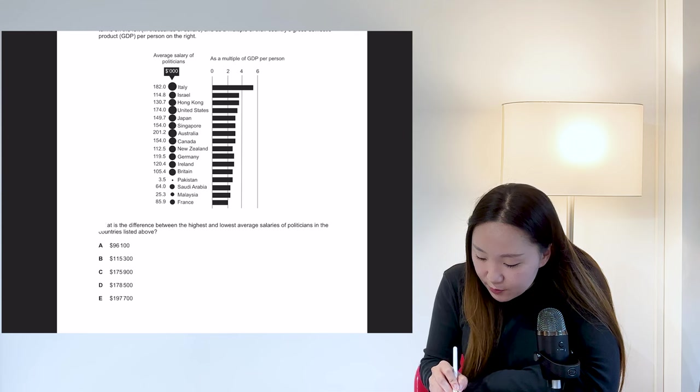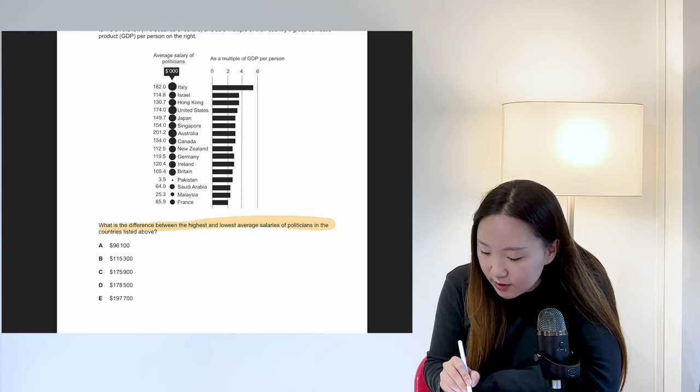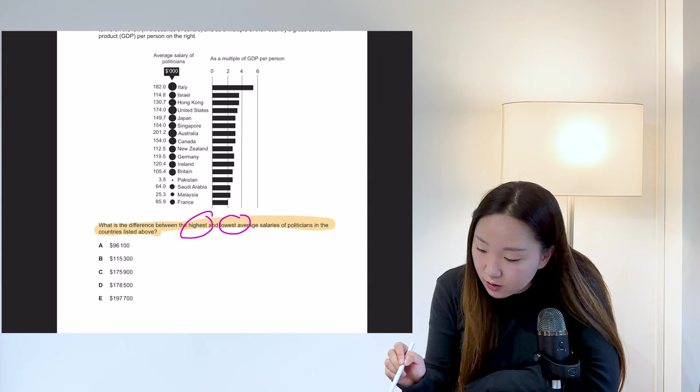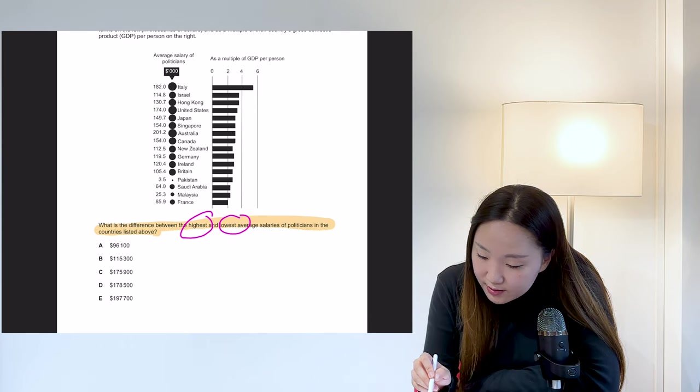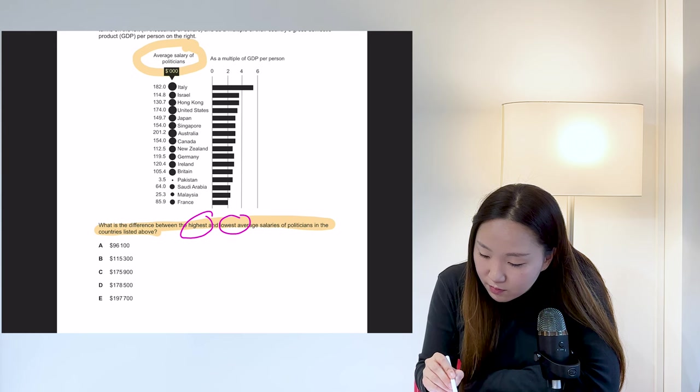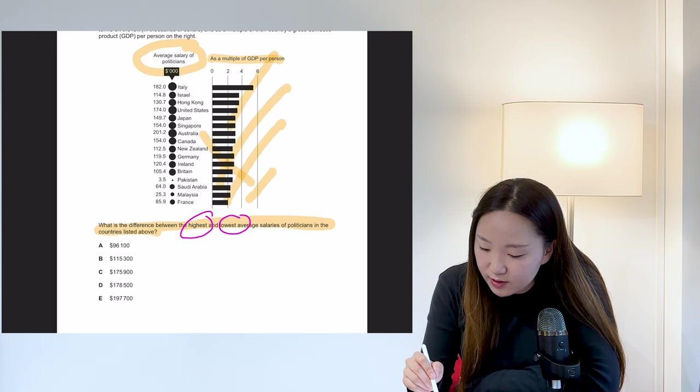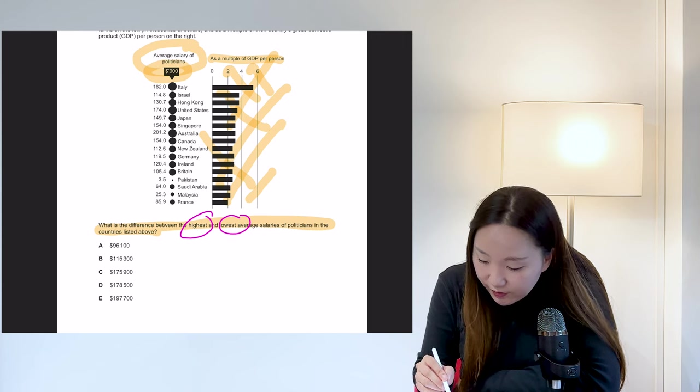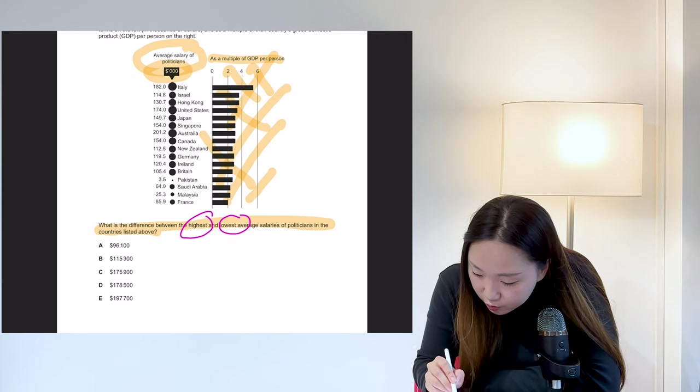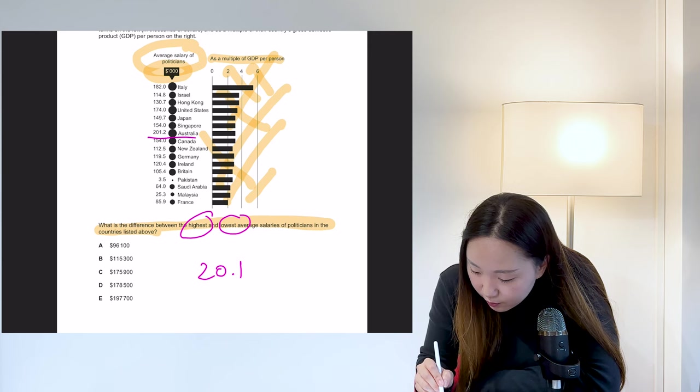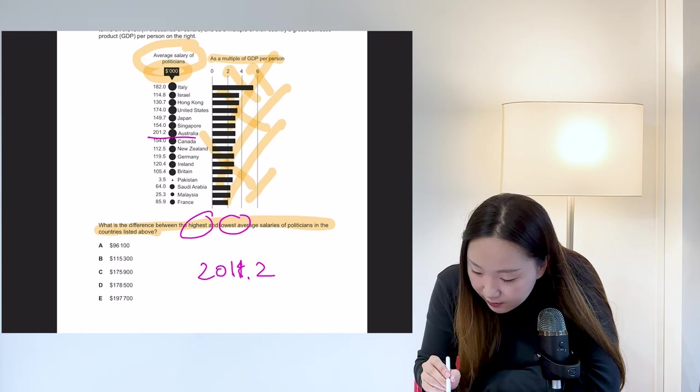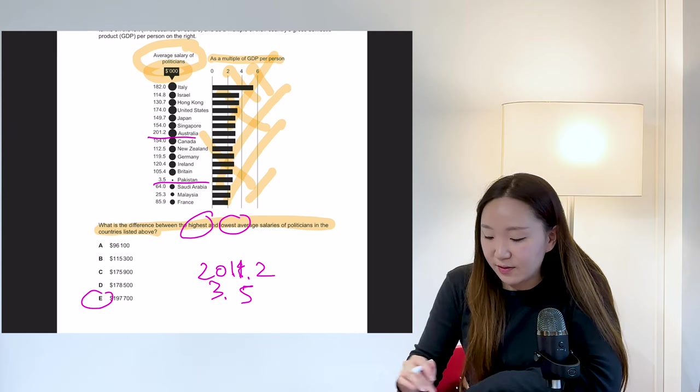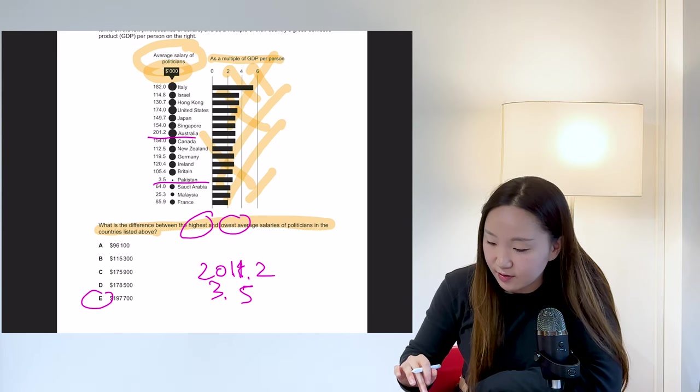Okay. What is the difference between that? What is the difference between the highest and lowest average salaries of politicians in the countries listed above? So highest and lowest seems pretty simple. Let's look. We've got the average salary of, selected salary of politicians here. And then as a multiple of GDP per person. Okay. Well, we don't need any of that. So just ignore that. We're just focused on the numbers here and just note here that it is in thousands of dollars. So the highest is Australia 201.2 and the lowest is Pakistan 3.5. So the difference between these two roughly E, I mean exactly E I'm sure but guessing because of the, without calculating it.